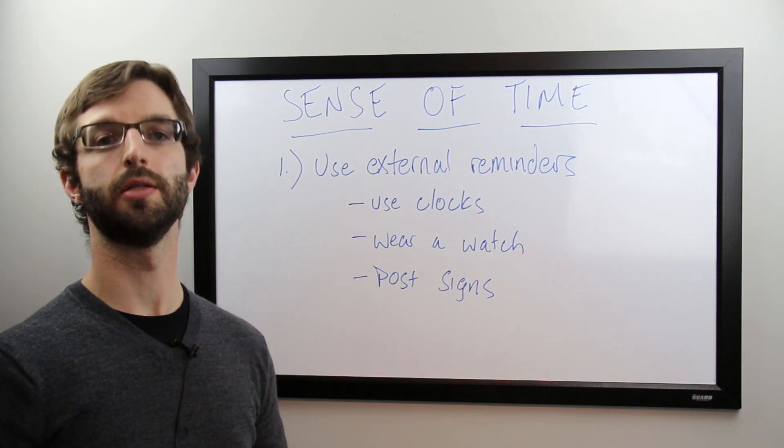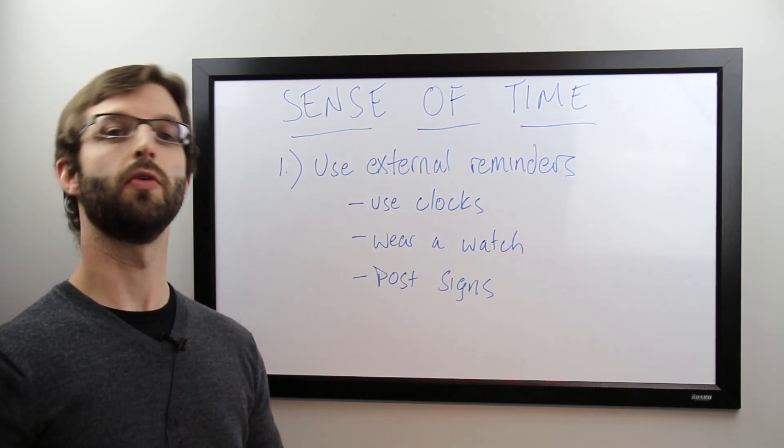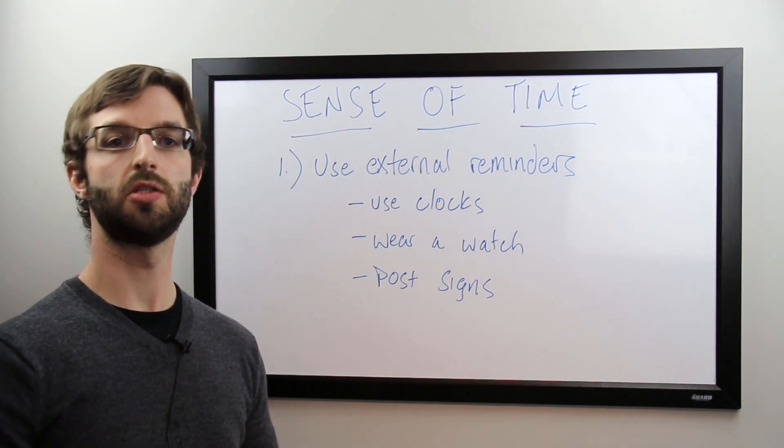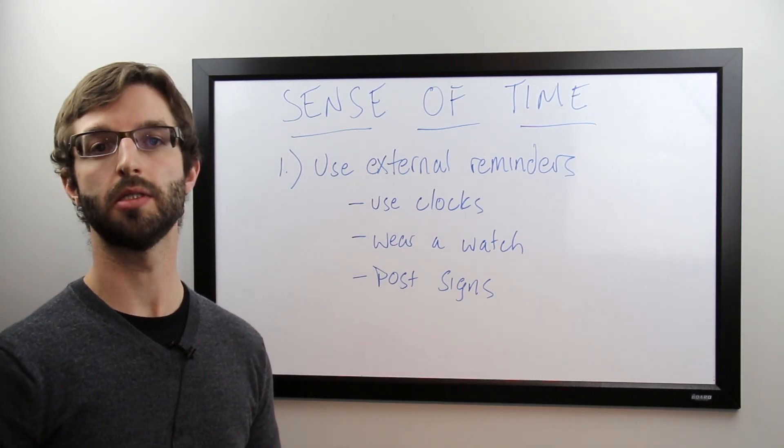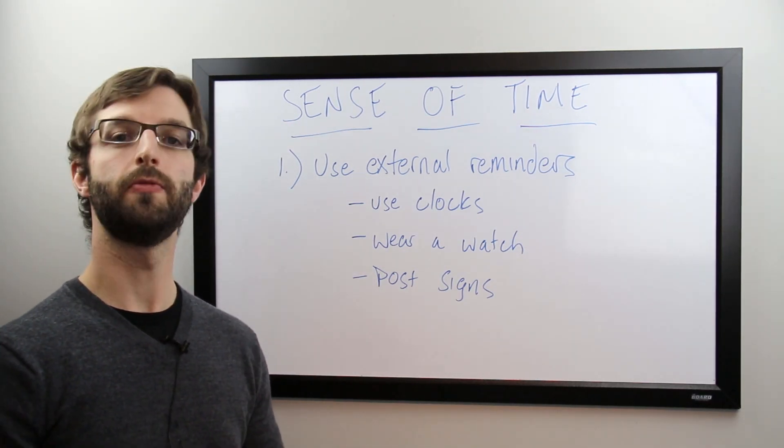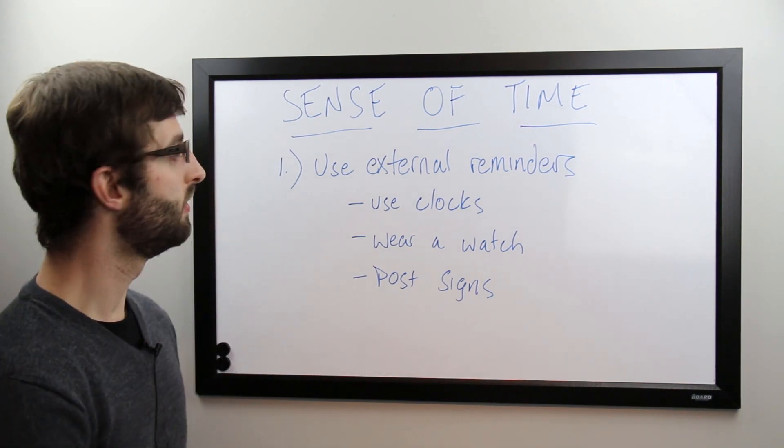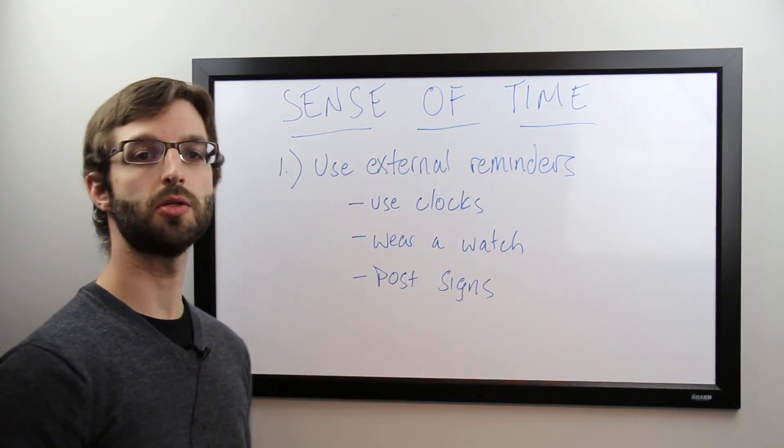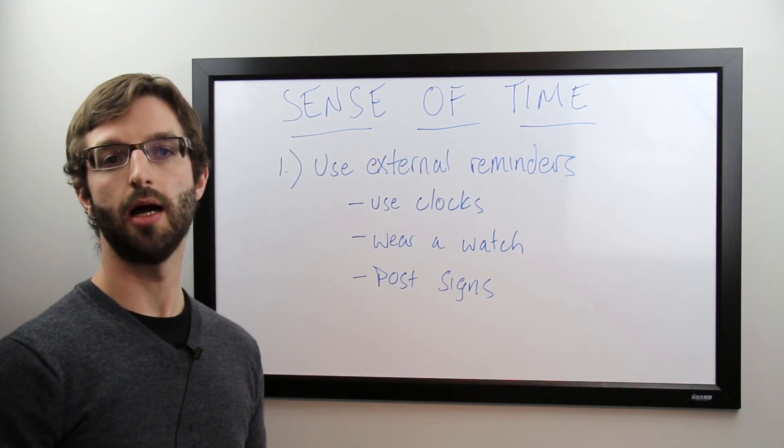So when we struggle with a weak internal sense of time, one of the best overarching strategies we can use is to externalize our time management so we don't have to rely on our own faulty executive functions. First one I would suggest is use external reminders. First one you can do is use lots of clocks.